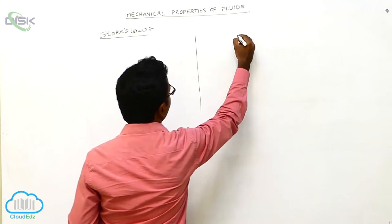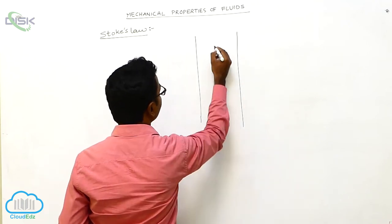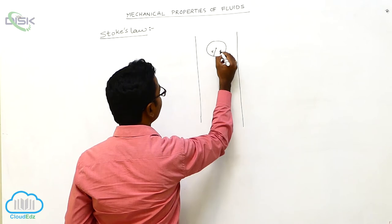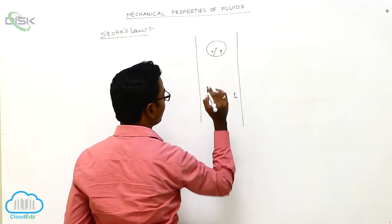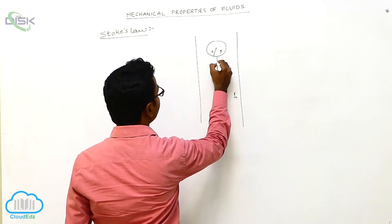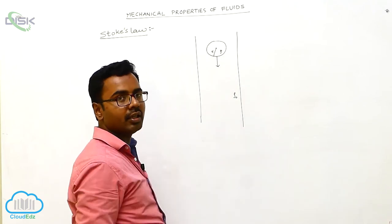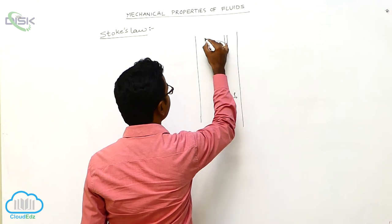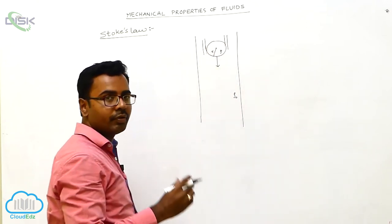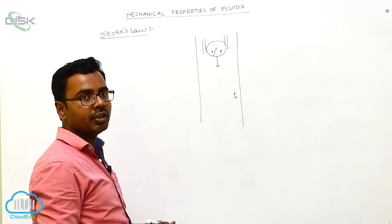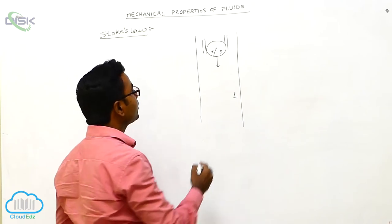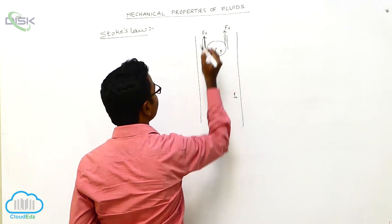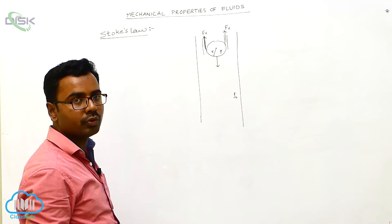Suppose this is a liquid or fluid column, and this is the object — a sphere having radius R and density rho. For the fluid, density is rho-naught. As this sphere is falling down, it drags the layers of fluid along with it. Motion is set up between adjacent layers of the fluid, and viscous force starts to act in the upward direction.